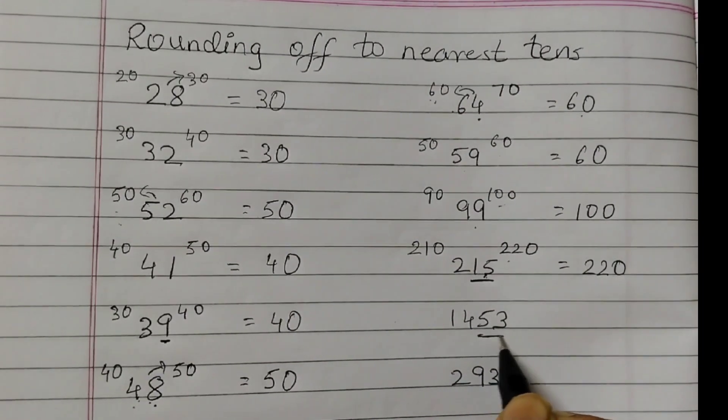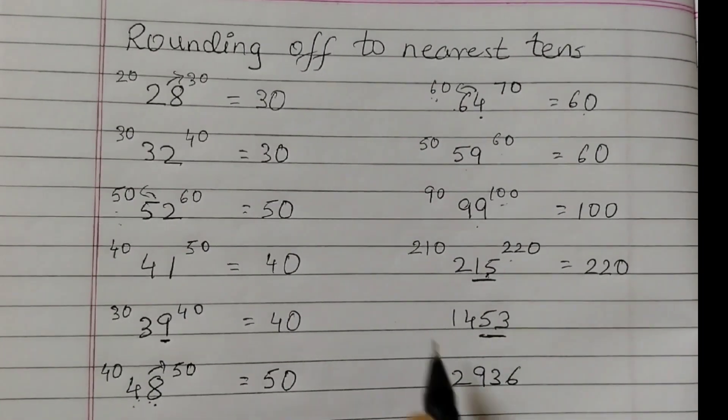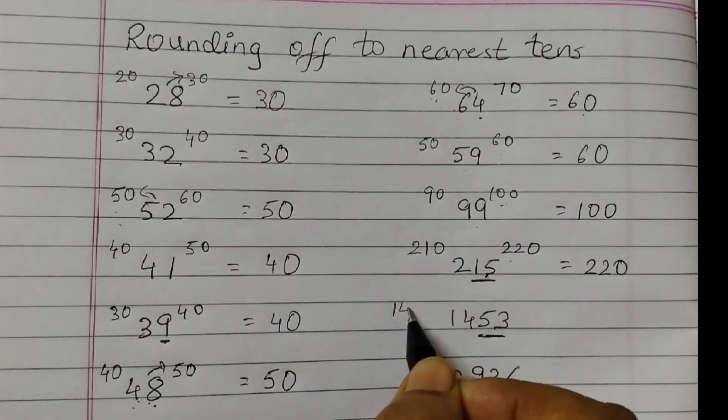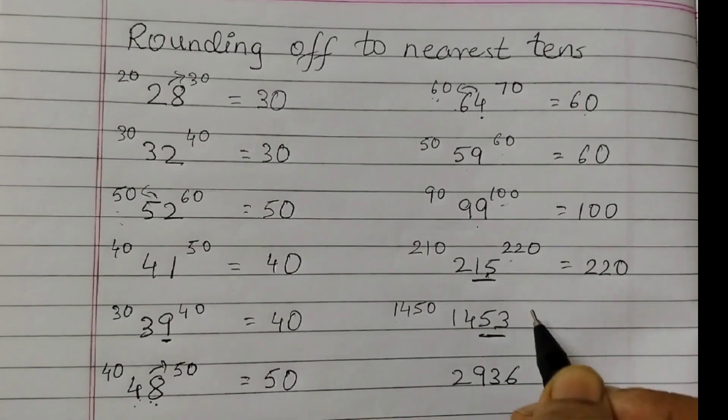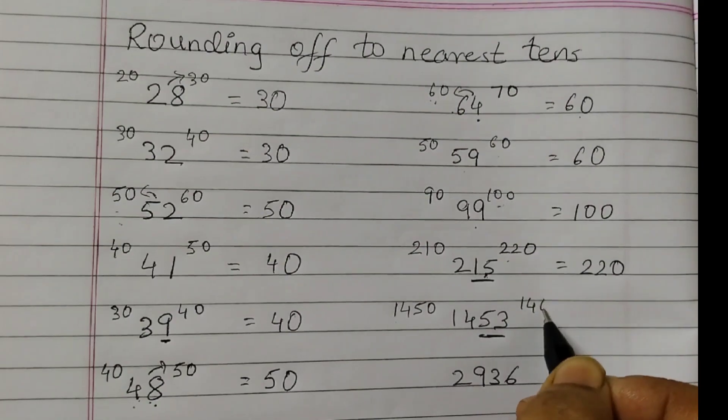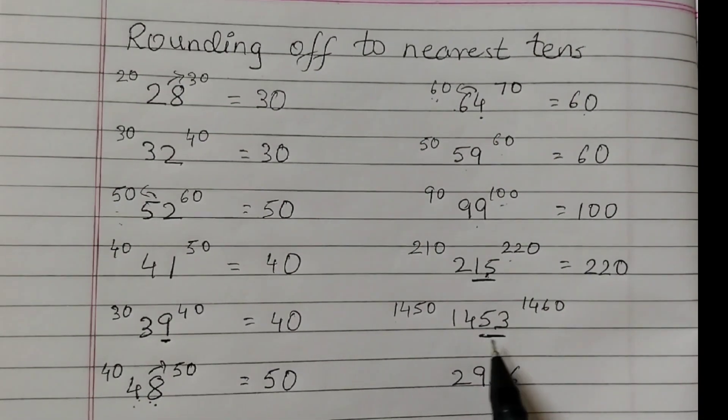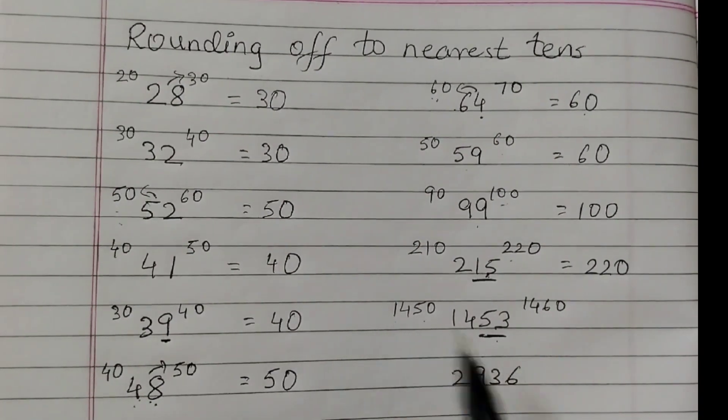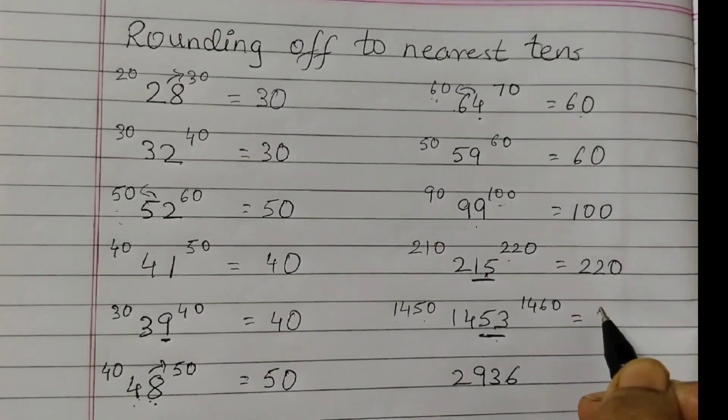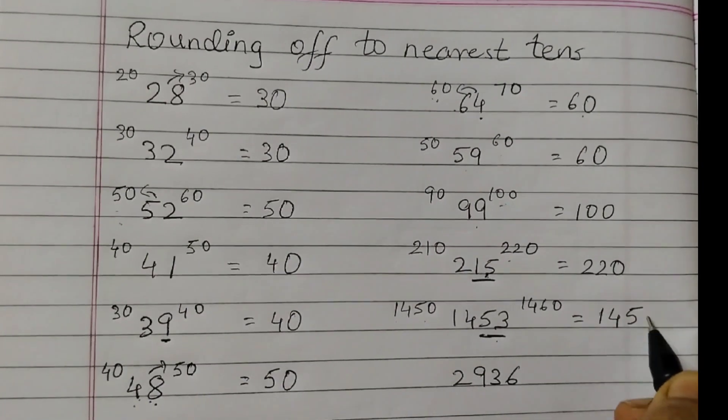1453. So we are interested only in these 2 places. That's between 1450 and 1460. Now 53, if you see, is closer to 50. That means 1450.